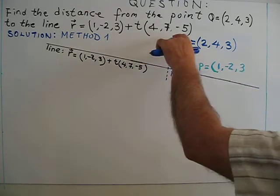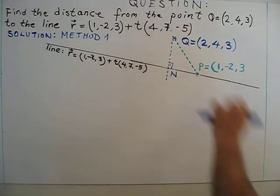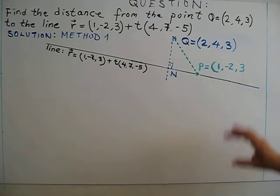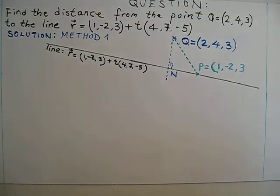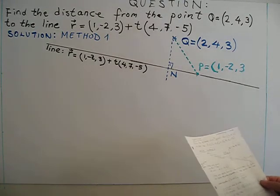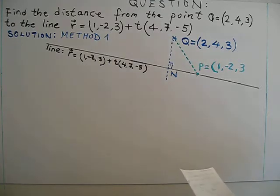So from this point you go perpendicular - this will be the distance, distance from point to line. So the question is what is the length of QN.